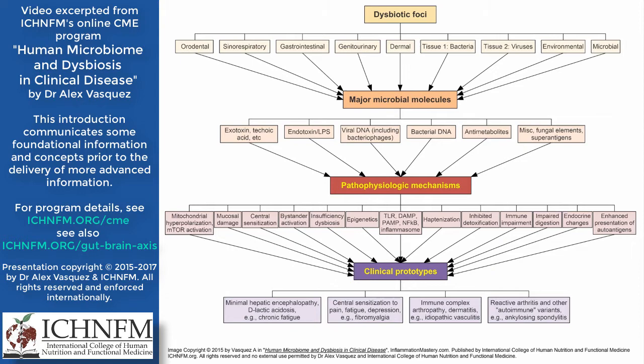As a result of the body's response to that total inflammatory load, we either get physiologic responses or pathophysiologic responses. These can include mitochondrial dysfunction — and in particular a subtype called mitochondrial hyperpolarization — along with mTOR activation. We can also talk about central sensitization as a result of microbial exposure, bystander activation, and haptanization.